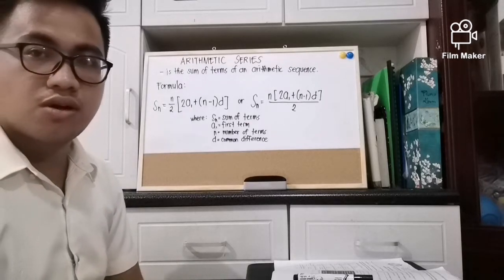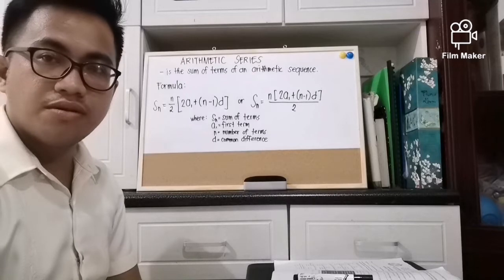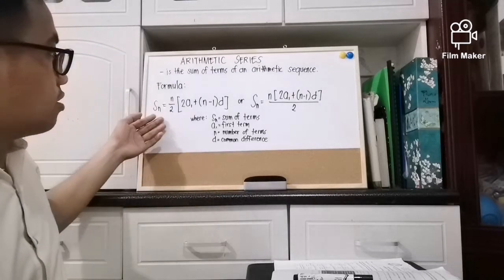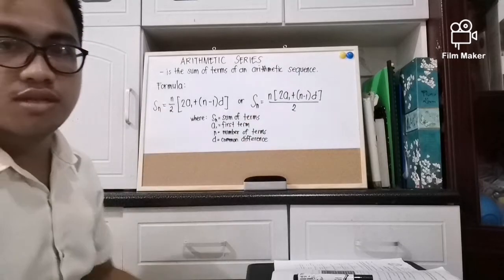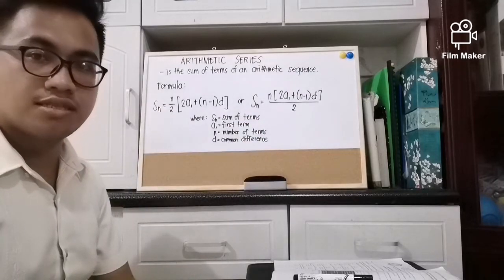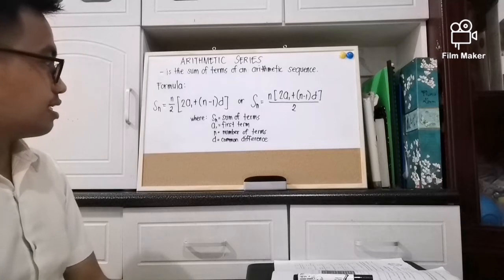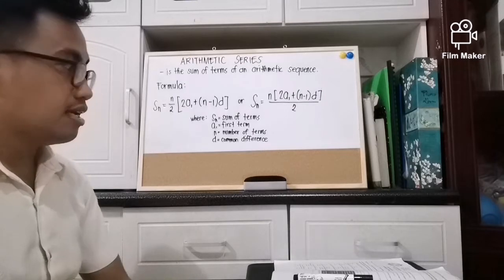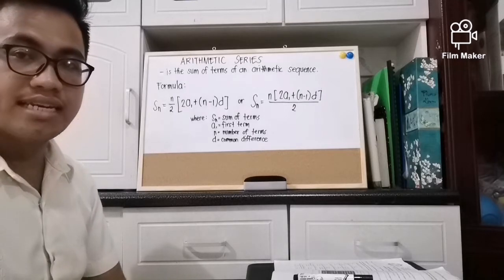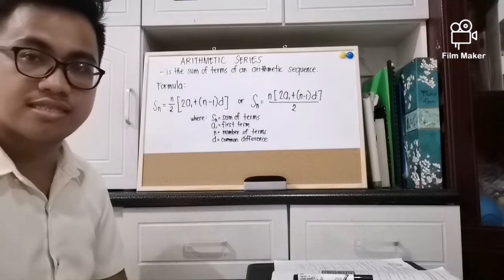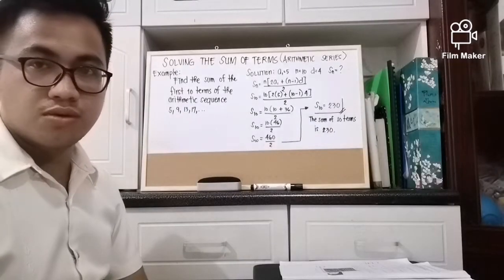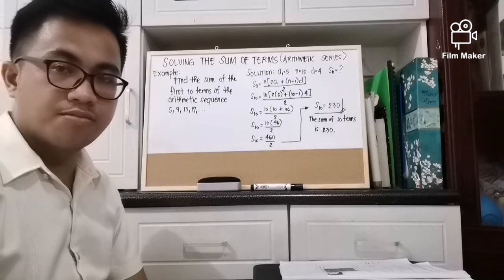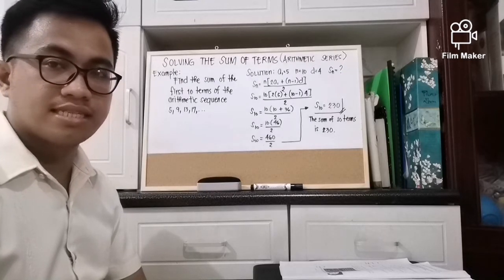The next topic is the sum of terms of an arithmetic sequence, also called arithmetic series. To solve for this, you can choose either of two formulas. The legend for the formulas: Sn is the sum of terms, a sub 1 is the first term, n is the number of terms, and d is the common difference.